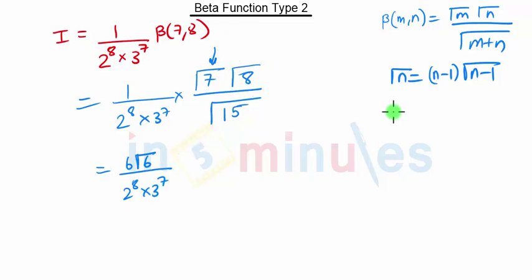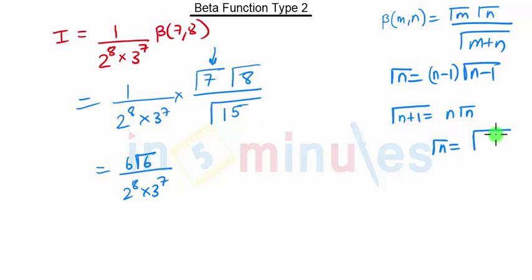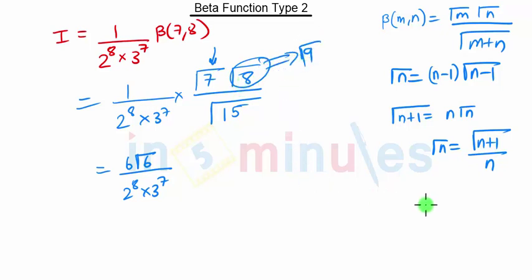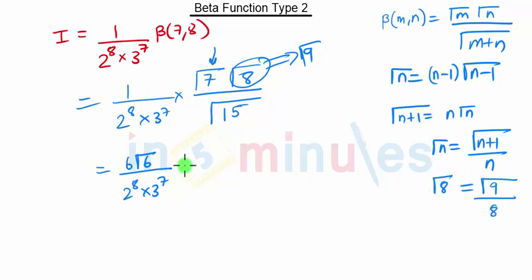What is gamma of 8? We know that gamma of n plus 1 is nothing but n gamma of n, so gamma of n is nothing but gamma of n plus 1 upon n. Because instead of gamma of 8 we need gamma of 9, gamma of 8 will be equal to gamma of 9 upon 8.